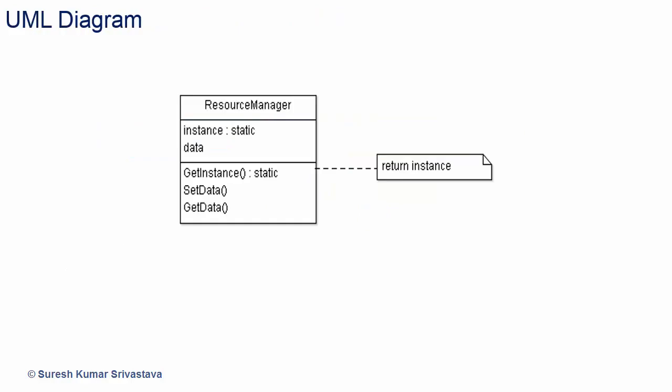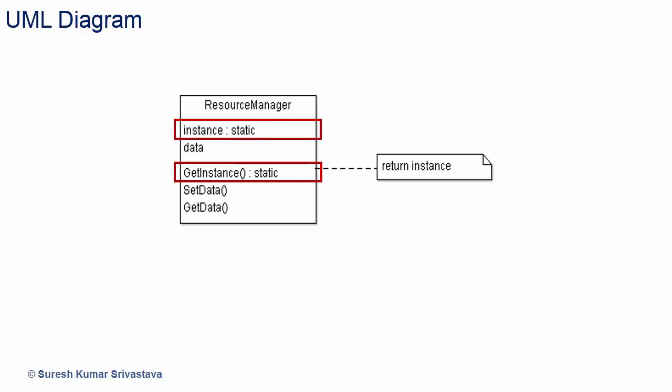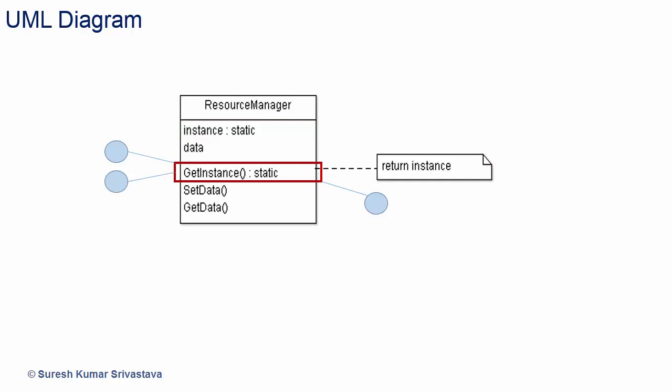I have created a UML diagram for this. The class resource manager has a static method get_instance to get the instance of the class. The class has a way to create an instance only once, and that is kept in a static variable instance. The logic in get_instance checks for the instance — if an instance is already created, it returns the same using the static variable instance; otherwise it creates the instance and returns it to the client. Multiple clients can access this instance through the static method get_instance.